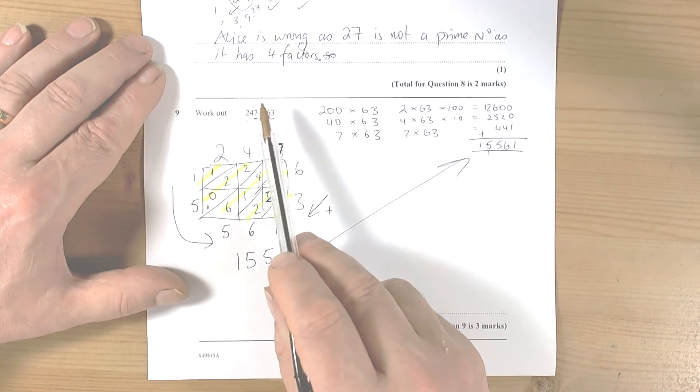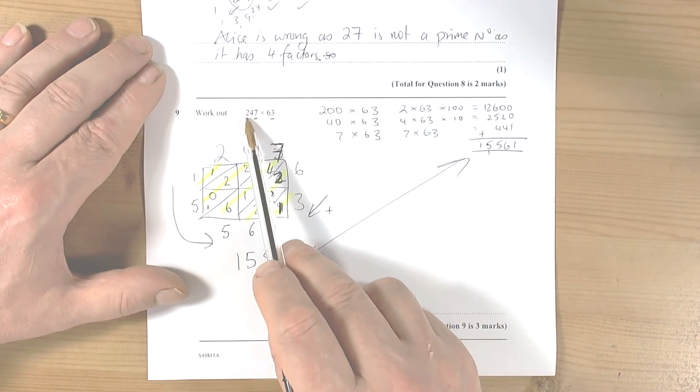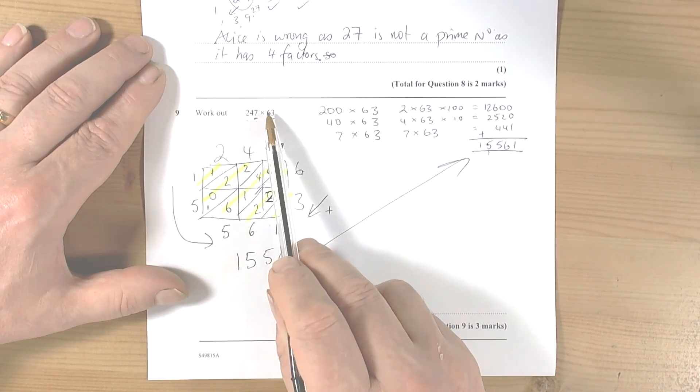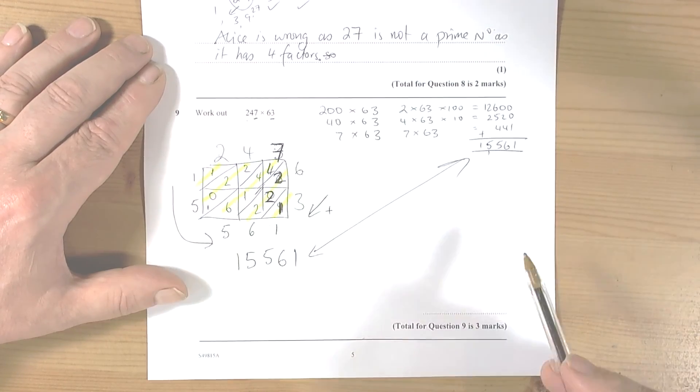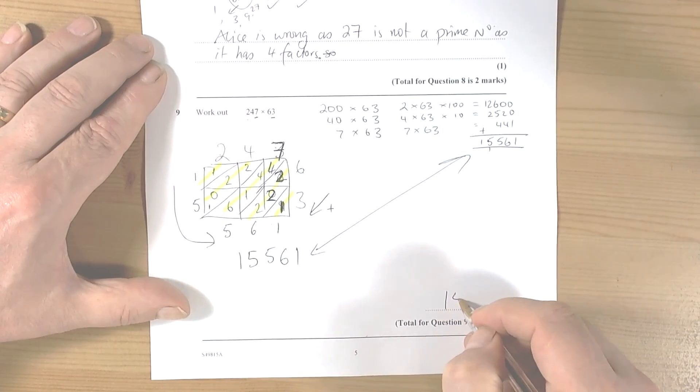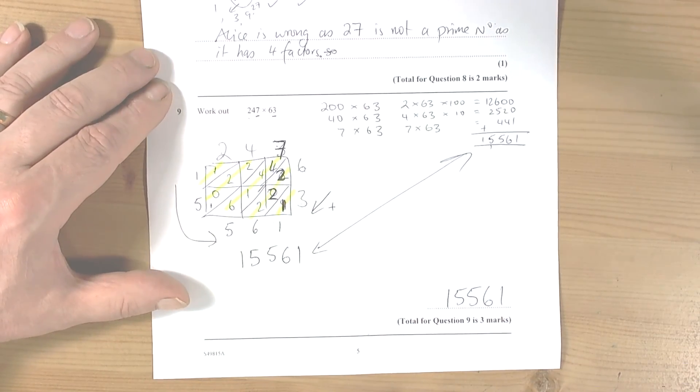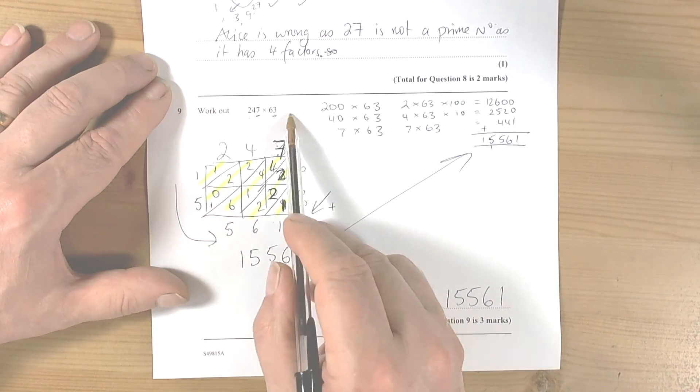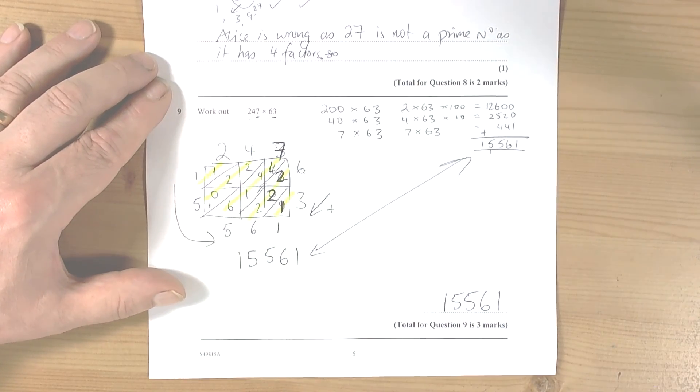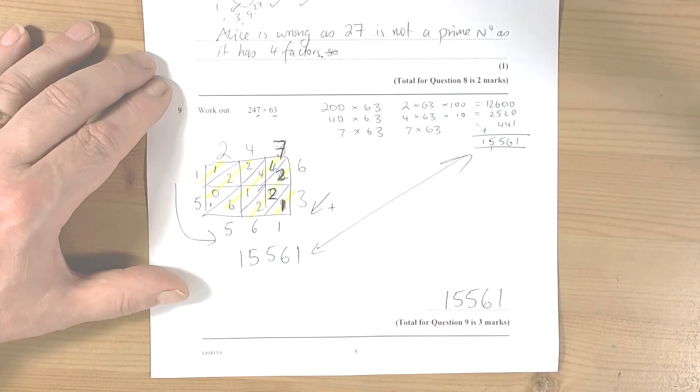Again, there are lots of other ways of doing this. You could break this down into individual hundreds, 40s and 70s, 60s and 3s, and do lots of calculations with that as well. Either way, you've got to learn a method that works to give you the correct answer of 15,561 if you have these numbers to multiply. So practice long multiplication, a popular topic guys.